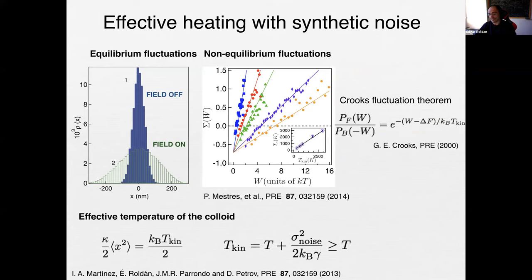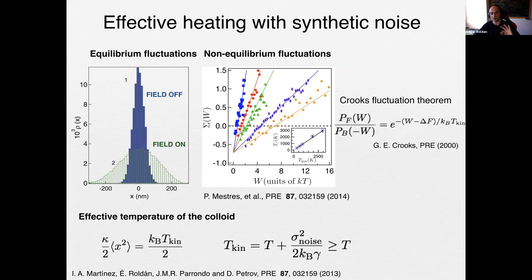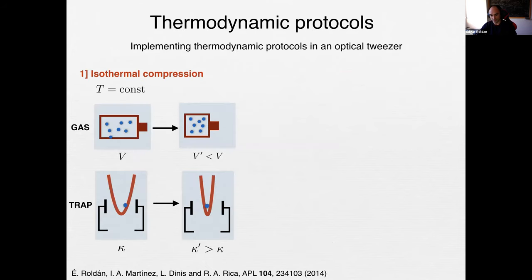We showed we can also do non-equilibrium processes like dragging a particle back and forth and test the Fluctuation Theorem (Crooks). The temperature extracted from the Crooks theorem is the same as the one from equilibrium — a consistency check. Now comes the essence of the Carnot cycle: how to implement the isothermal, isochoric, and adiabatic processes in this setup.